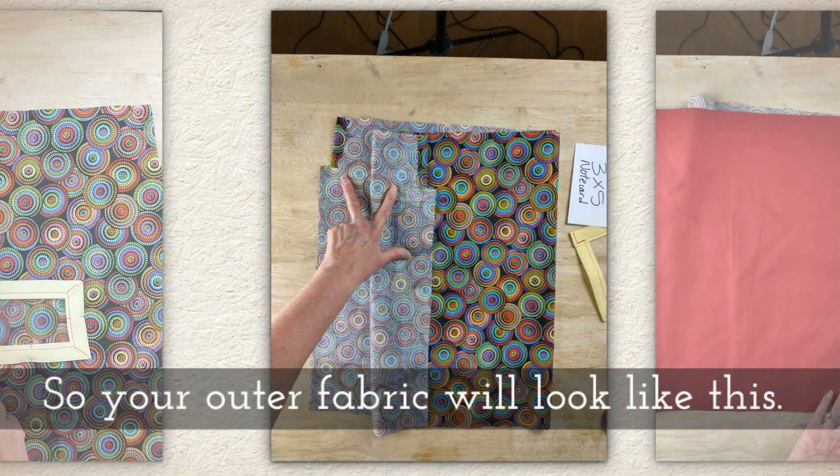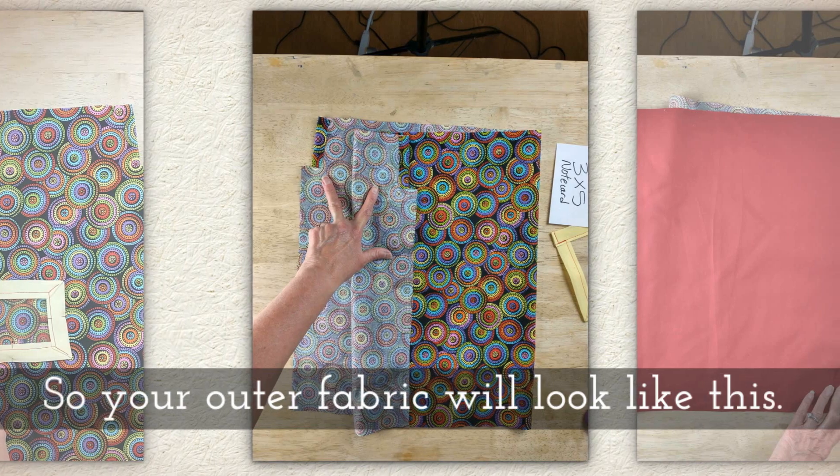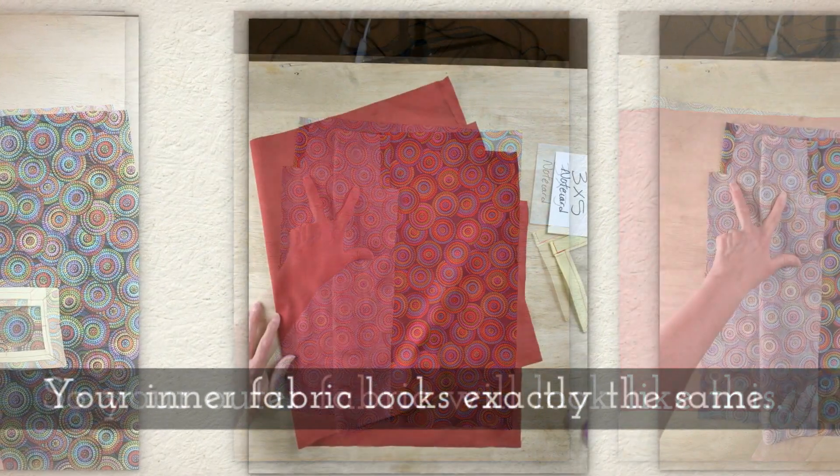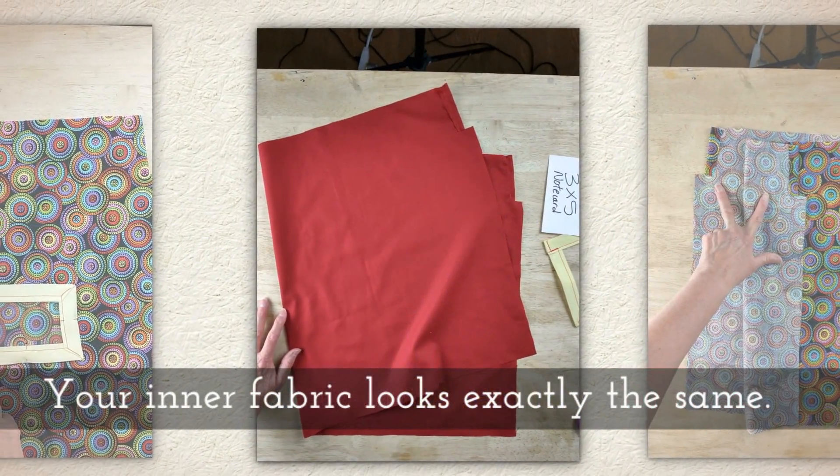Do this for all four of your snipped sections. So your outer fabric will look like this, and your inner fabric looks exactly the same.